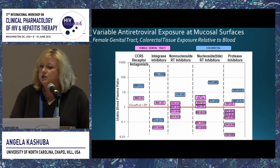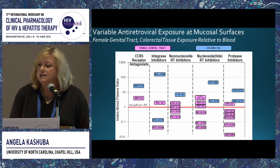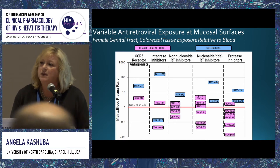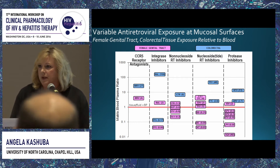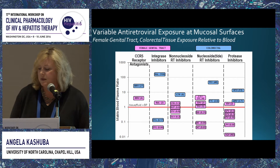My lab first sought to understand the exposure of mucosal surfaces and look at whether we see differences with antiretrovirals in terms of exposure between cervical and vaginal tissue and colorectal tissue. This is a summary of those data, divided in columns by therapeutic class, with AUC exposures normalized for blood plasma concentrations. Anything along the red line of 1 means tissue concentration equals blood plasma; anything above means the drug is concentrating higher in the mucosa; anything below means concentrations are lower than in plasma.